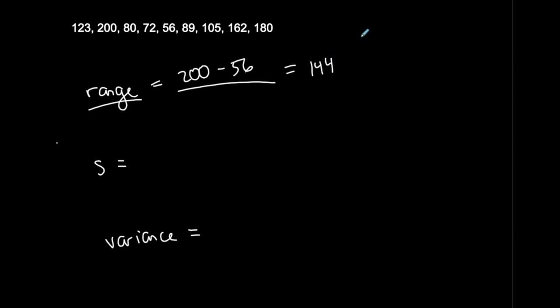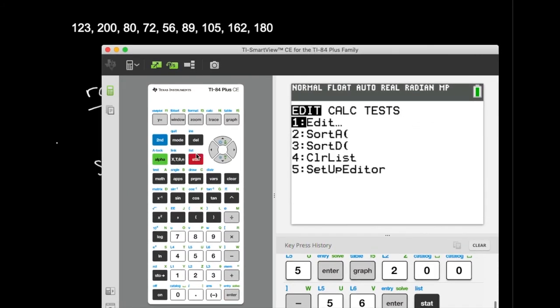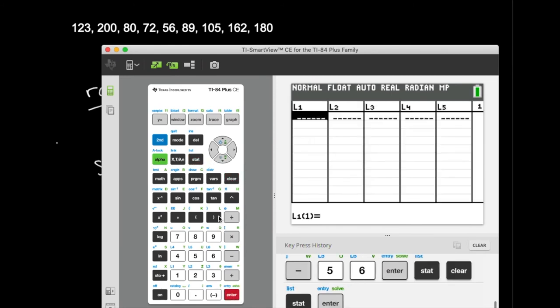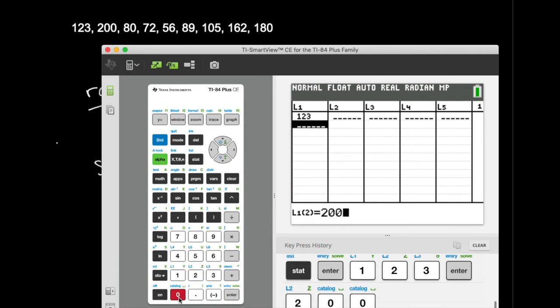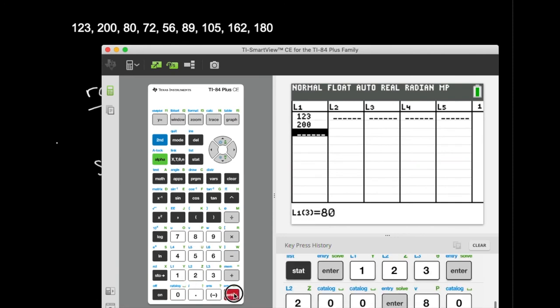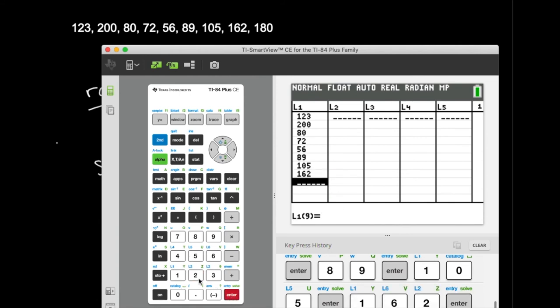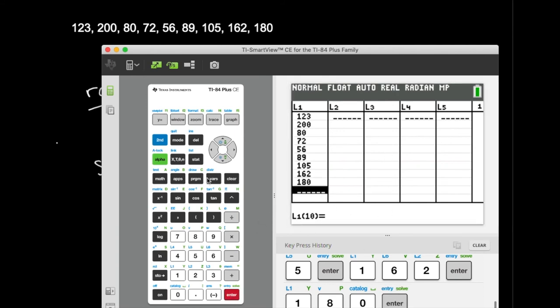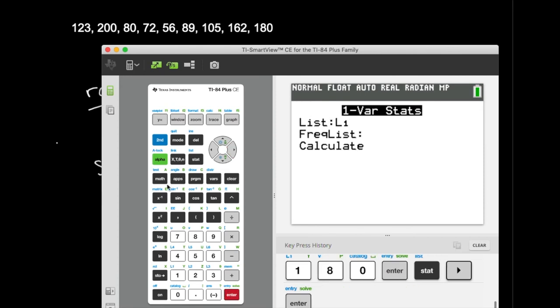Standard deviation. So let's do this on the calculator. I'm going to input all my data values in here in L1. So 123, 200, 80, 72. Hopefully you guys saw the other video first so that you know how to do this and follow along. 56, 89, 105, 162, and 180. And I'm going to find my measures of variation, or at least my standard deviation. So stat, calc, L1. I don't need anything here. Calculate.